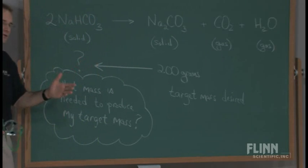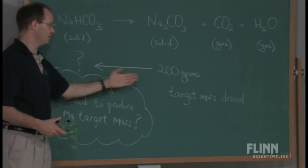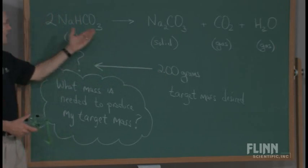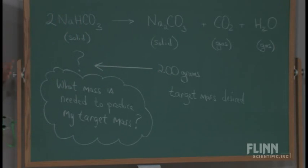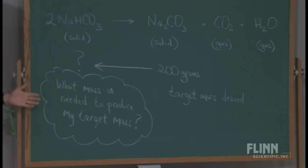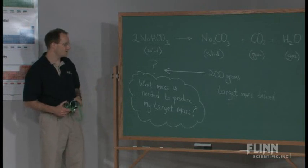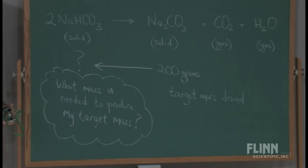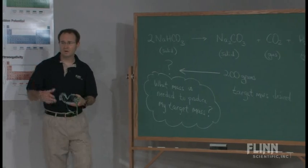It's their job to then work backwards. 2.00 grams — how many grams of this should I start with? So the only way that they can really get started is to be able to answer this question: what mass of the sodium bicarbonate is needed to produce the assigned target mass of the sodium carbonate?